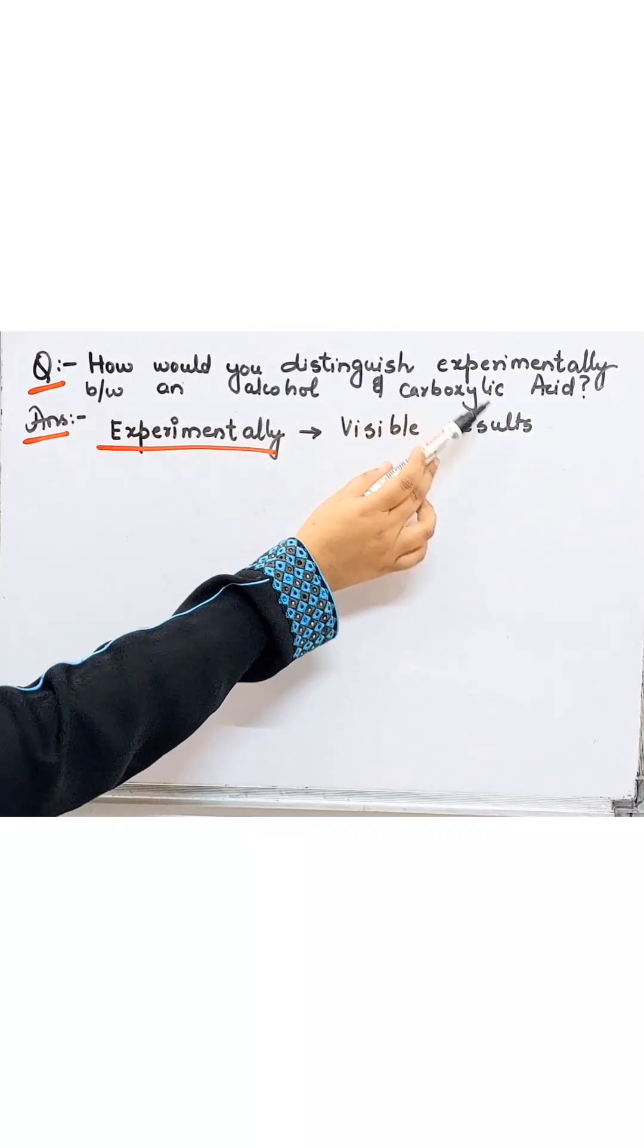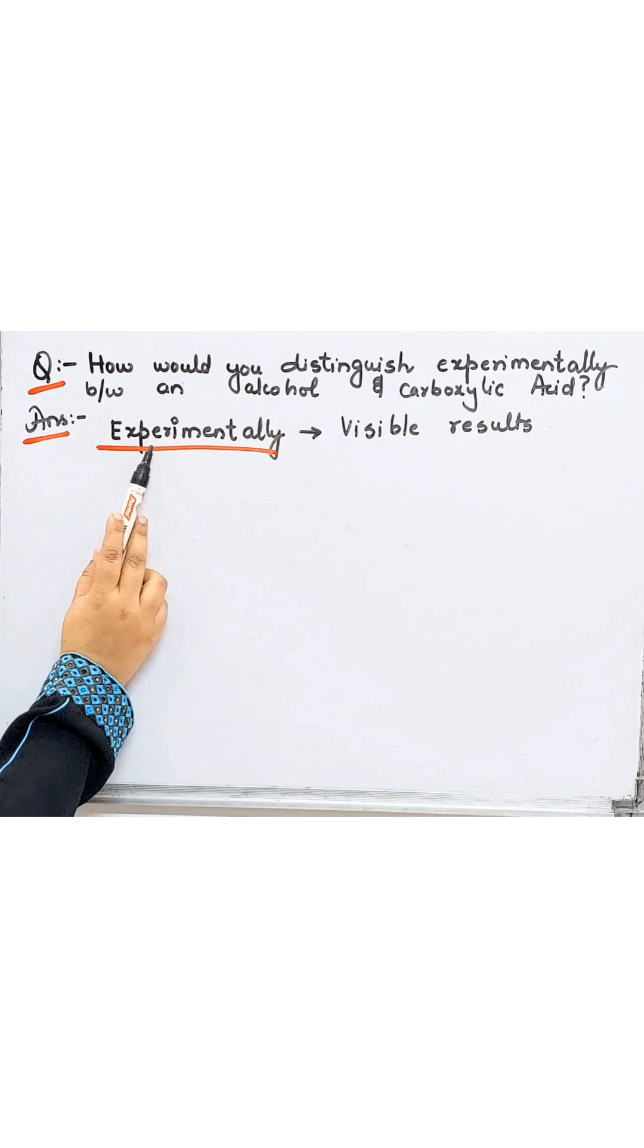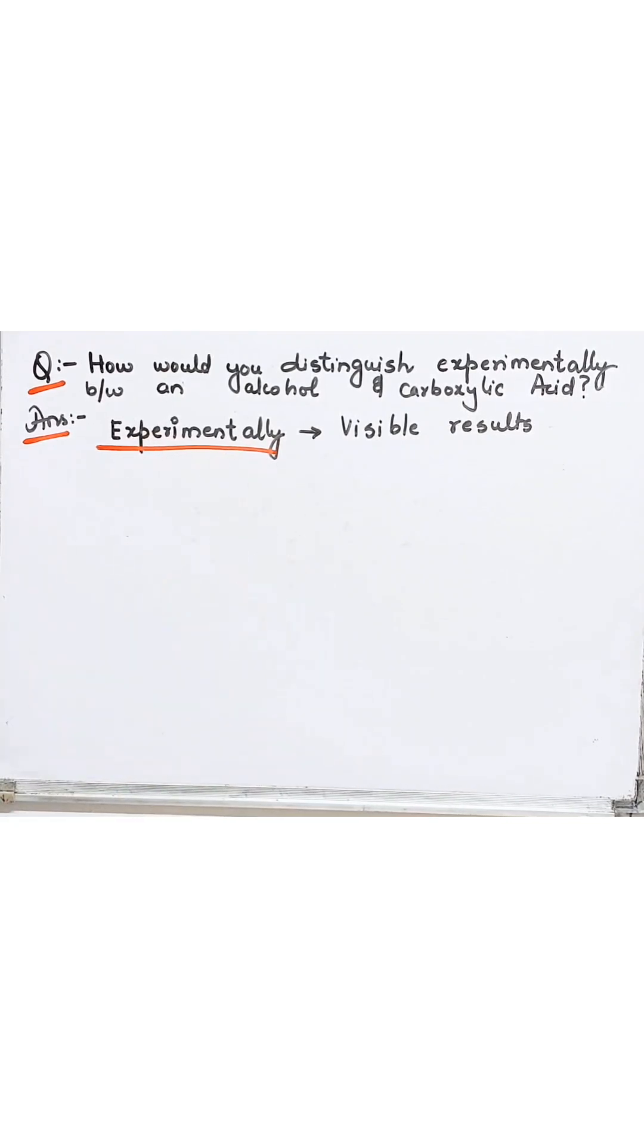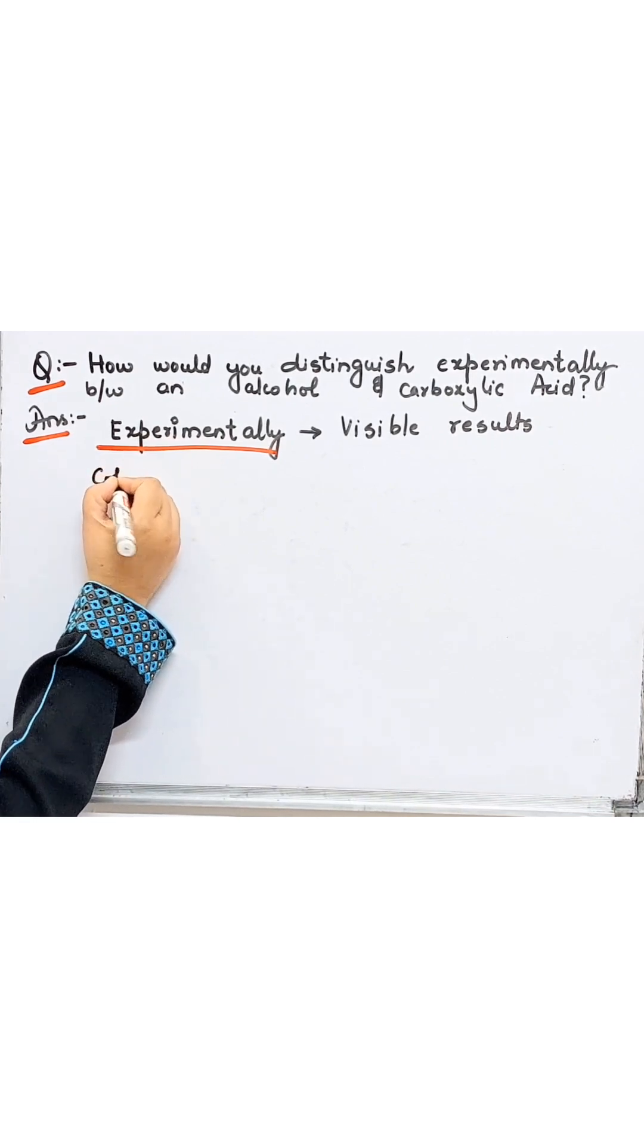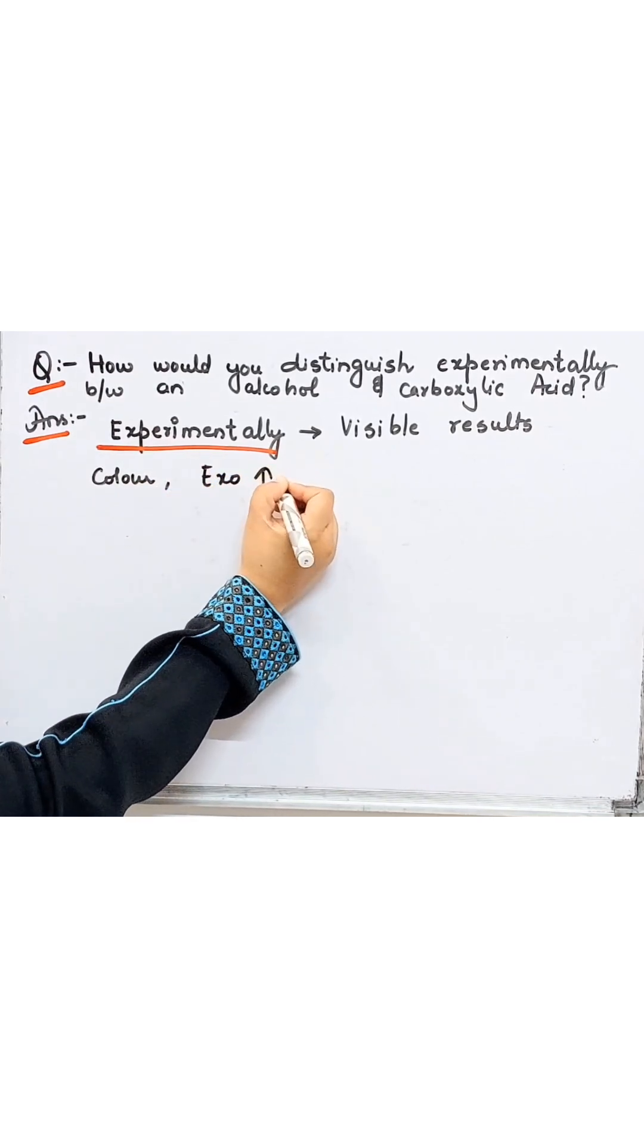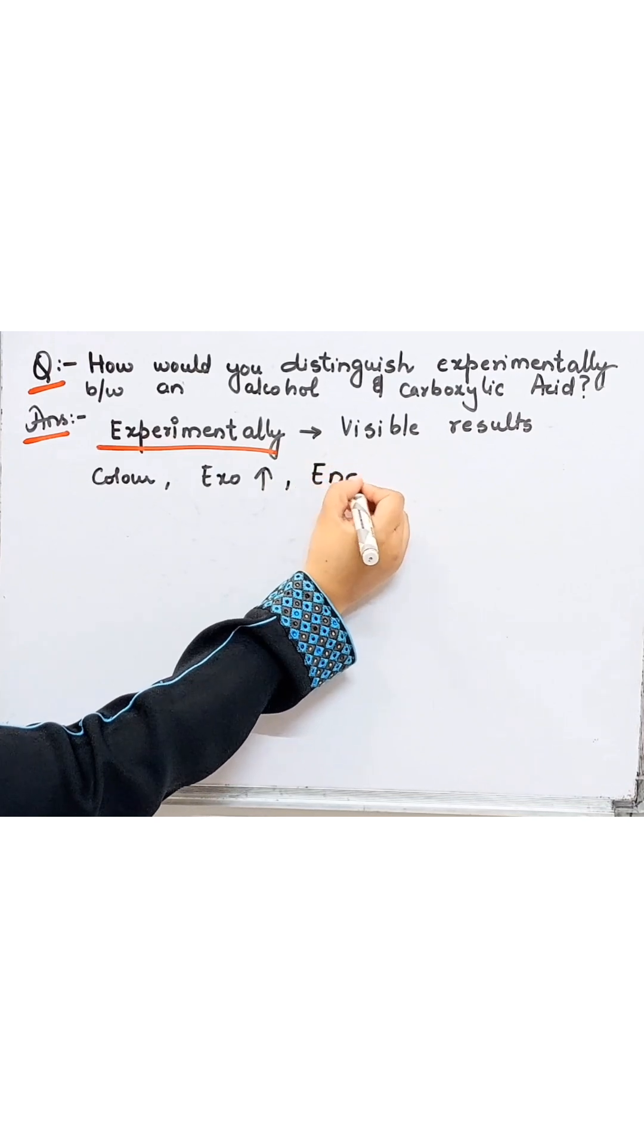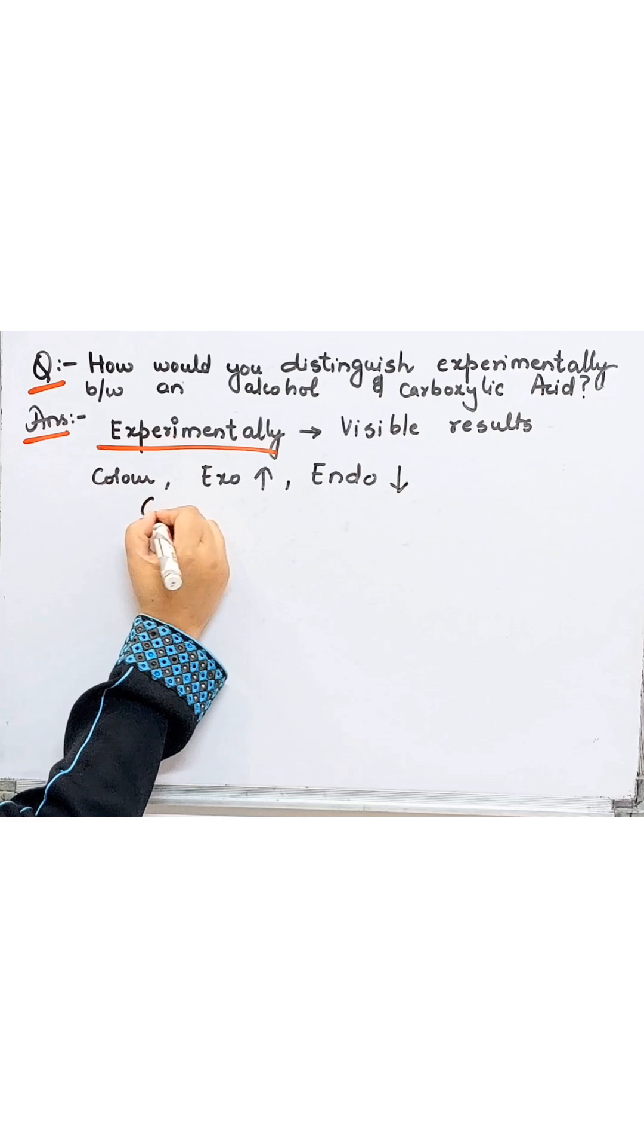How will you distinguish experimentally between an alcohol and carboxylic acid? Experimentally means where the results are visible through our eyes and that are done experimentally. Some of the things are if the color changes, if the reaction is exothermic, heat is evolved. The other results could be if the test tube gets cooler down or if a gas is evolved.